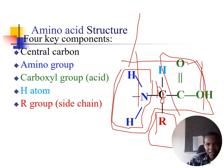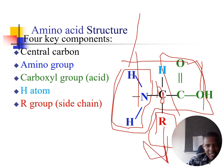The R group or side chain is variable — there are 20 amino acids, each with a different R group. These 20 amino acids attach to each other in sequences to form proteins, with the R group or side chain giving each amino acid its unique identity.